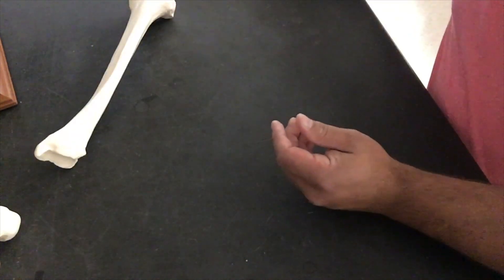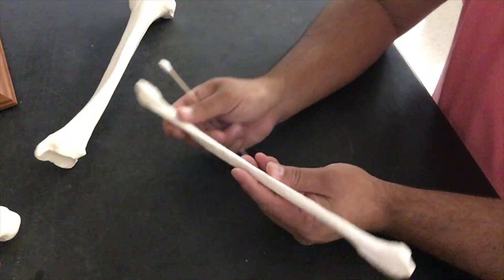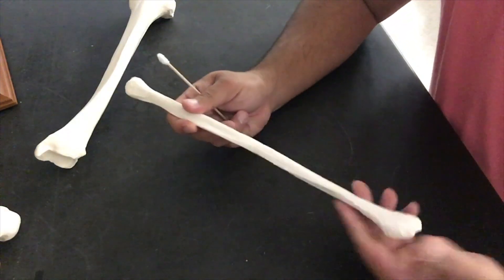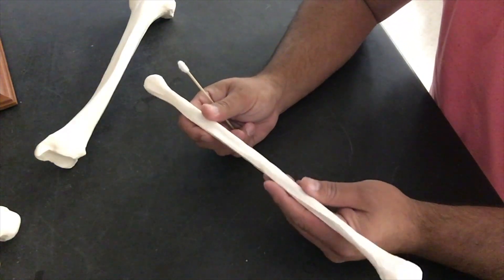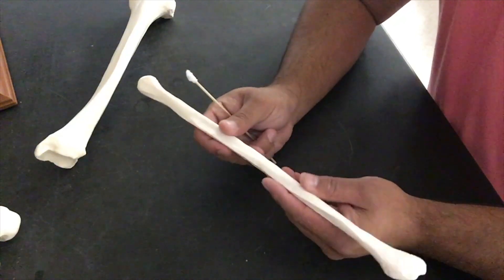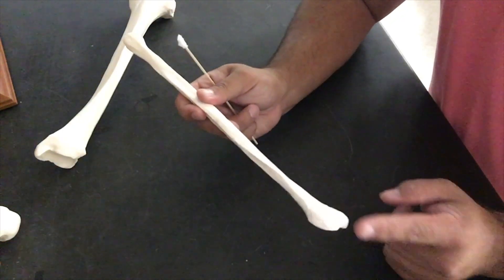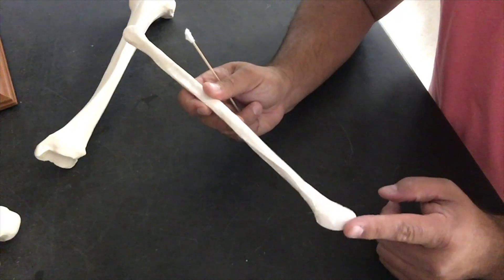The next bone we're going to look at is the fibula. Now the fibula is really straightforward because we only have a couple of things we need to know here. We have the head, the neck, the body or the shaft, and our lateral malleolus.